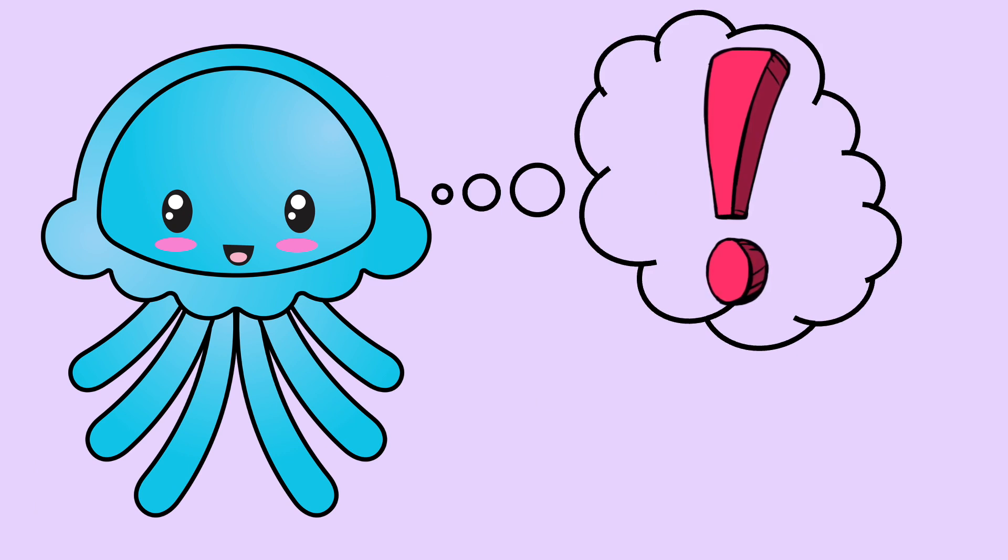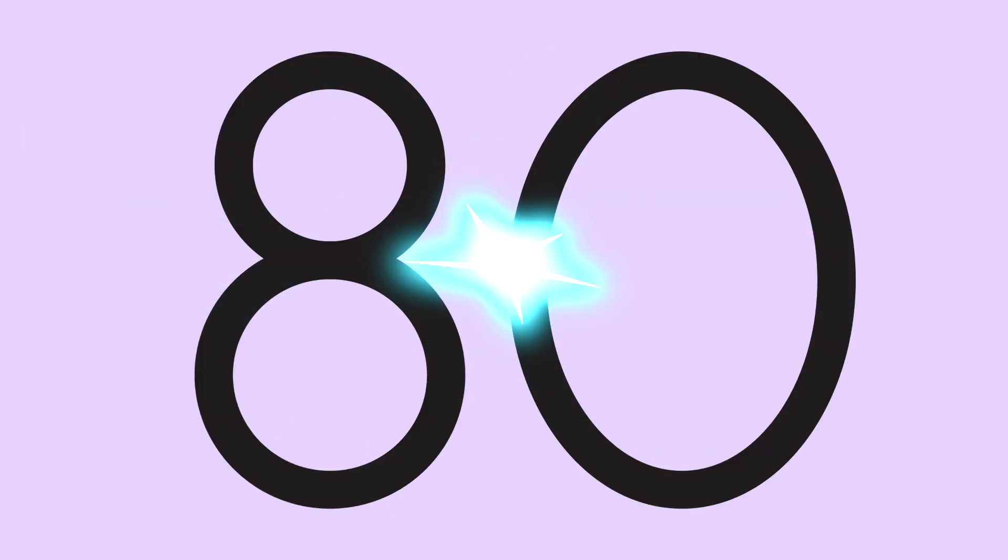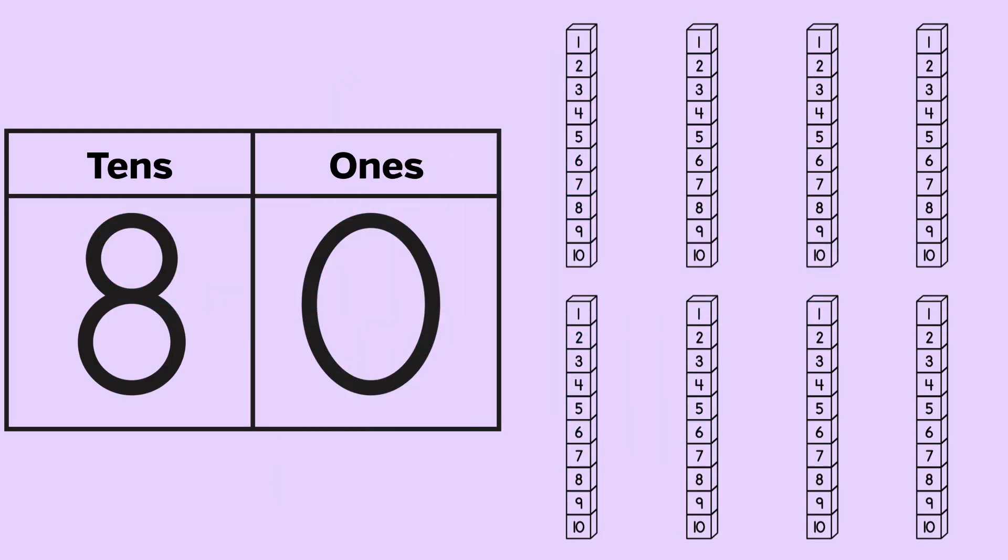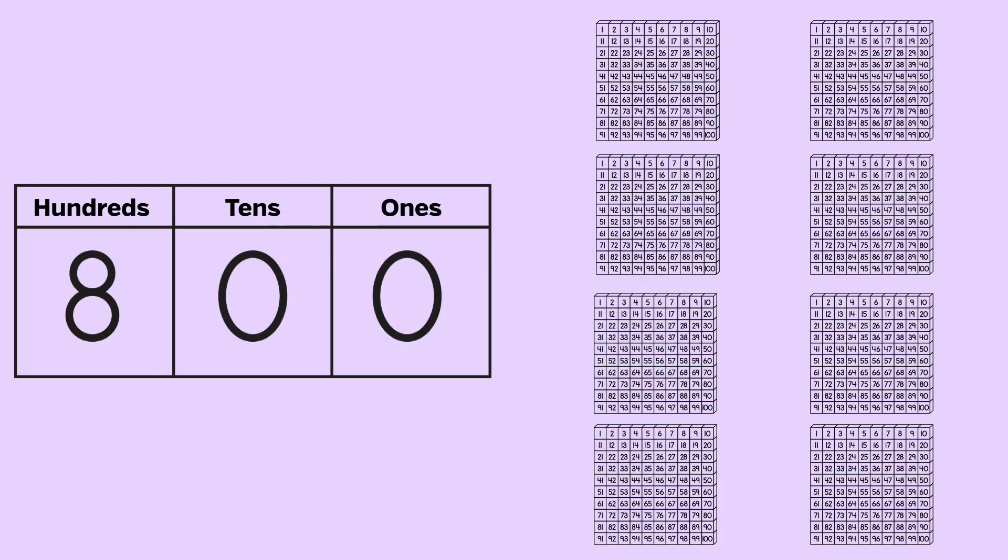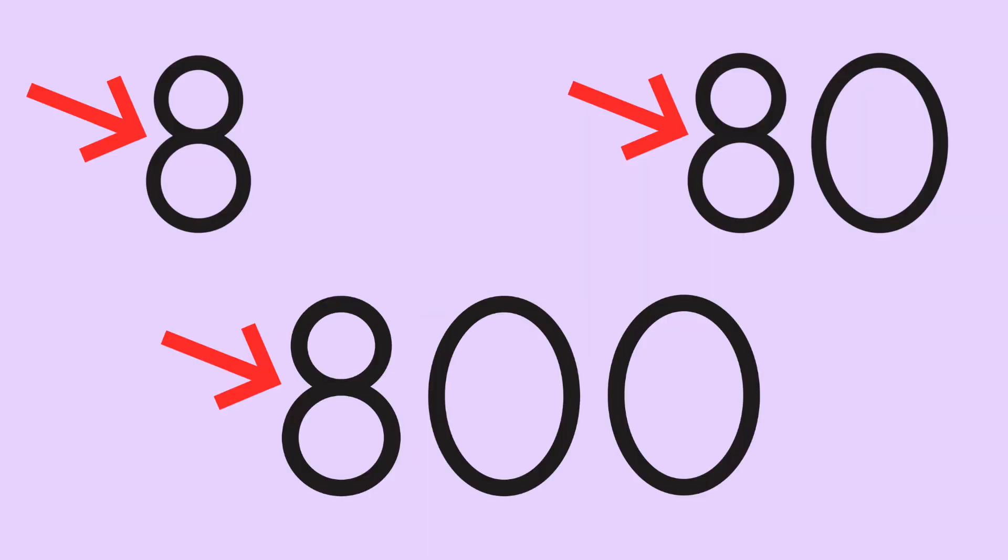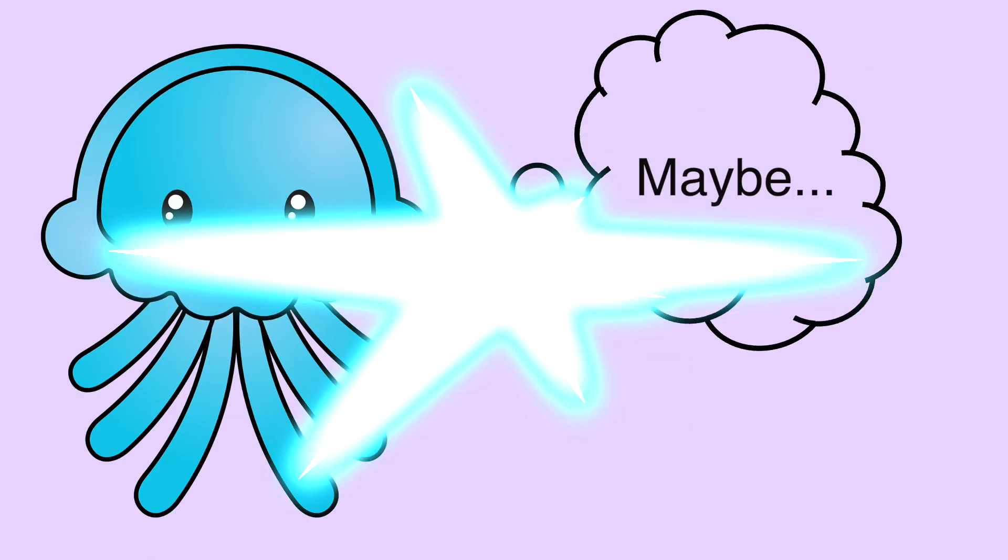Joey knows that where each numeral sits in a number tells us what it is worth. Since the place of the 8 changed, the value of the 8 changed too. He knows this is called place value. Maybe, he thought, we can use place value to help us compare numbers.